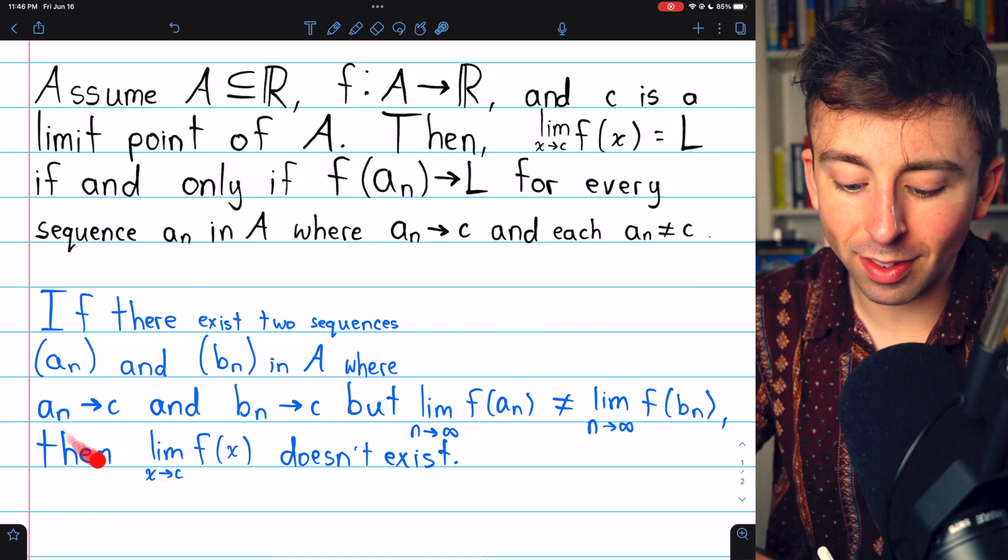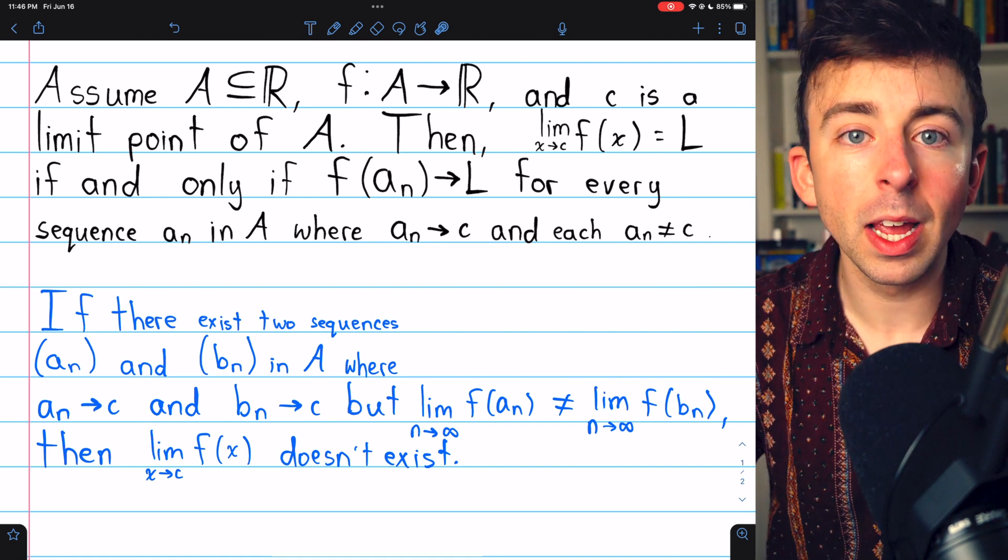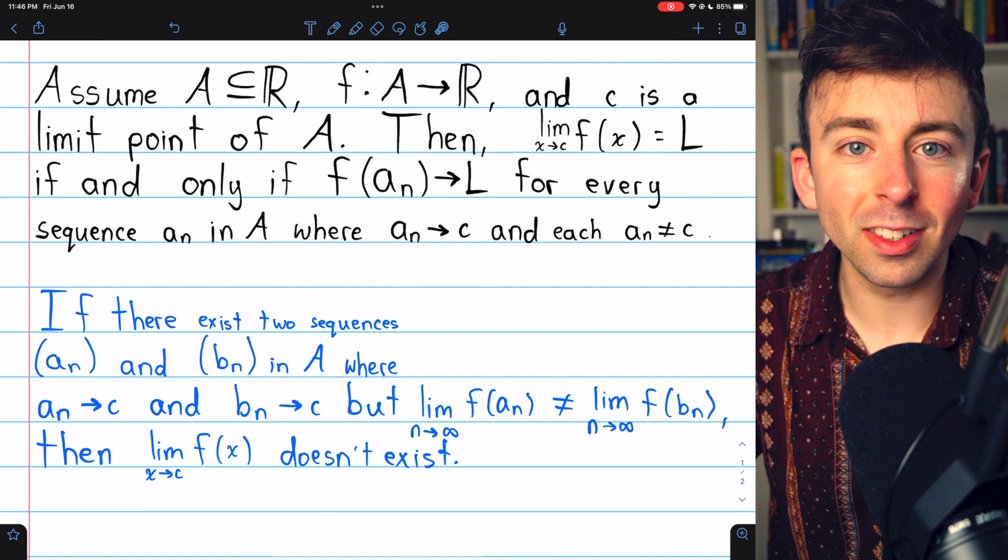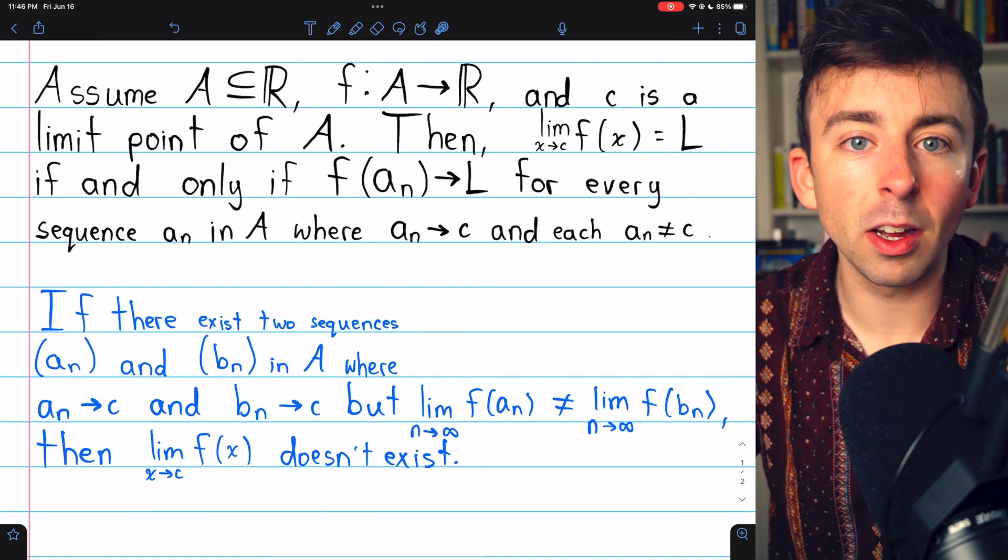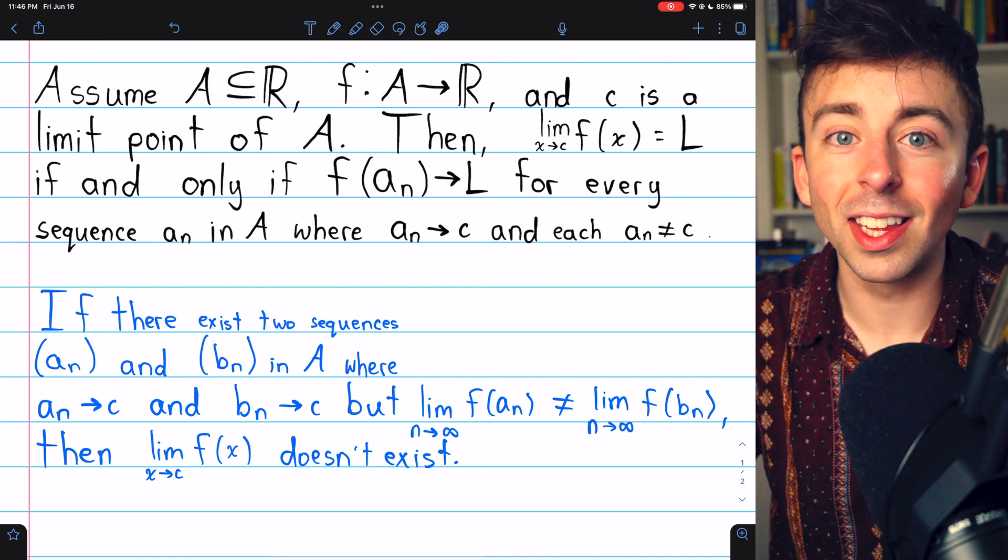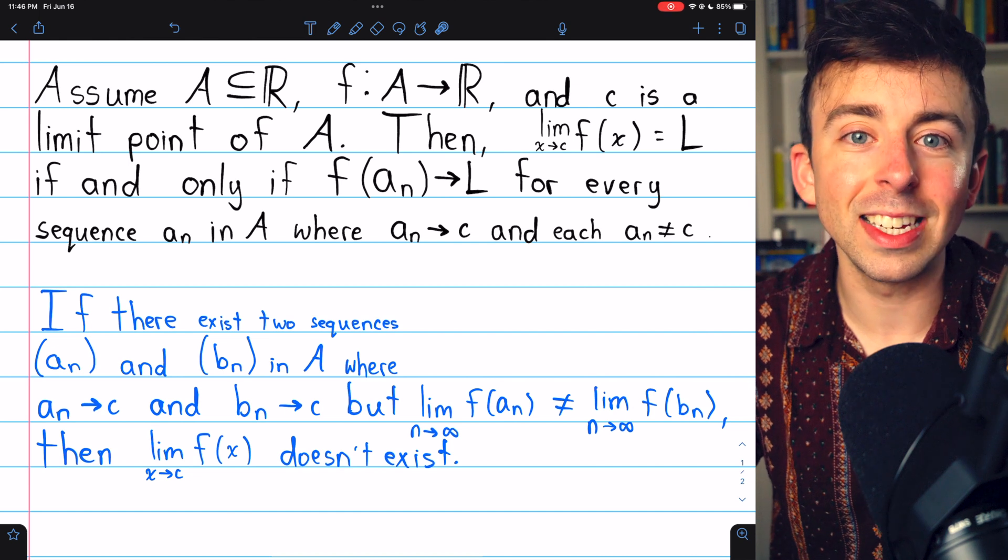And again, this is just the contrapositive of this result that we already proved. If two sequences both converge to c, but the limit of their images under the function are not equal, then the limit of the function as x approaches c can't exist.